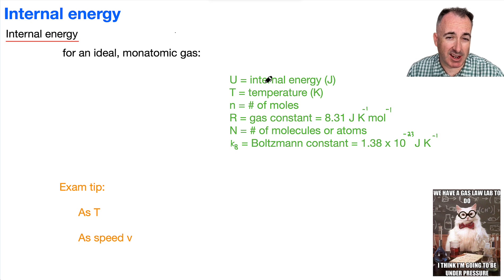And remember, it's the sum of the kinetic and potential, but we have a specific equation that's going to help us if we have an ideal and monatomic gas. What does monatomic mean? It just means it's all the same atoms. Okay, so we have an equation from our data booklet.